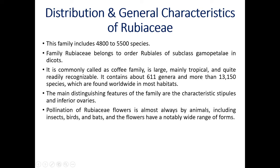Now let us start with distribution and general characteristics of Family Rubiaceae. This family includes 4800 to 5500 species. Family Rubiaceae belongs to the order Rubiales of subclass Gamopetalae in dicots. It is commonly called the coffee family. It is a large family, mainly tropical and quite readily recognizable. It contains 611 genera and more than 13,150 species, distributed worldwide in most habitats. Pollination of Rubiaceae flowers is almost always by animals including insects, birds, and bats, and the flowers have a notably wide range of forms.